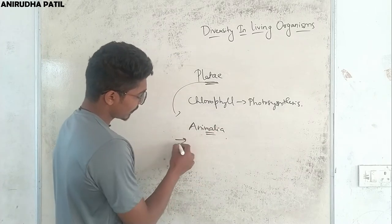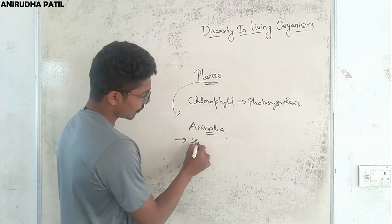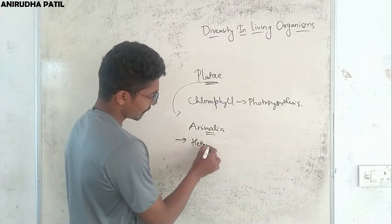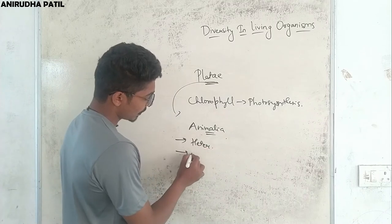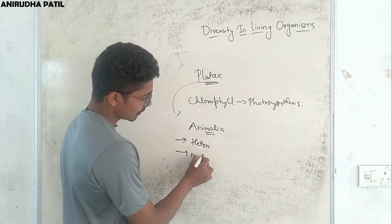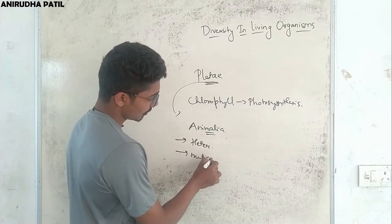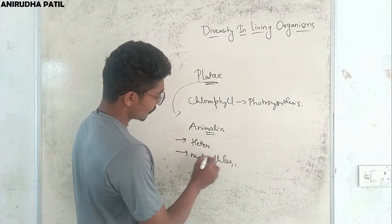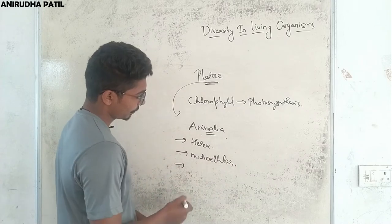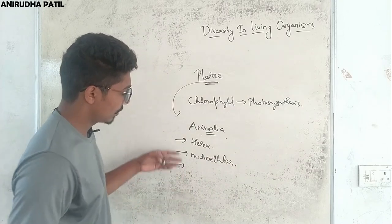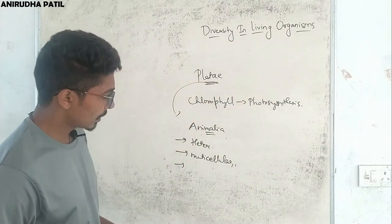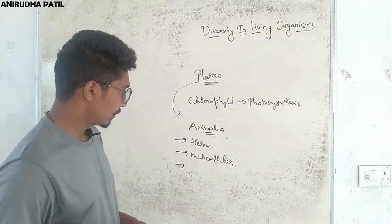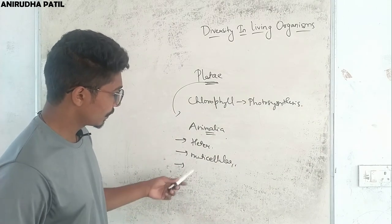Next is Animalia. Animals are basically heterotrophic and multicellular, without a cell wall. We will study their further subgroups soon.